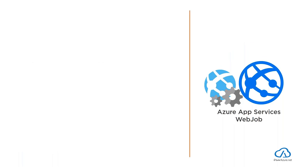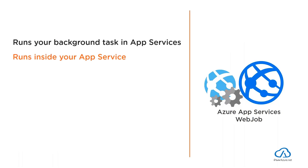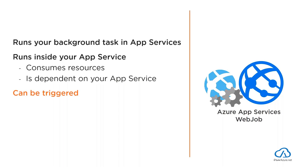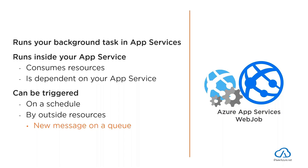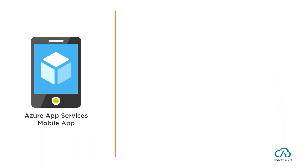Azure App Services Web Jobs are used to run background tasks within App Services. They run inside your App Service — in the context of a Web App or Mobile App, or in their own App Service Plan. If run inside a Web App, the job consumes the same resources as that Web App. They can be triggered on a schedule (e.g., every day at 8am) or by outside resources like a new message arriving on a queue.